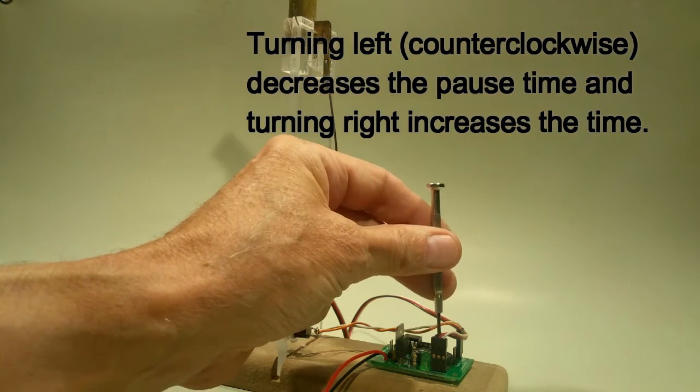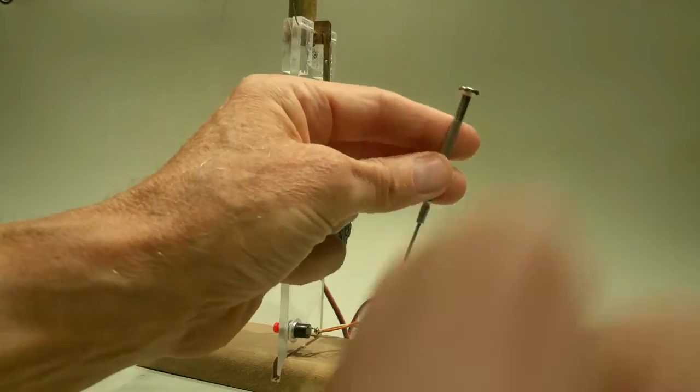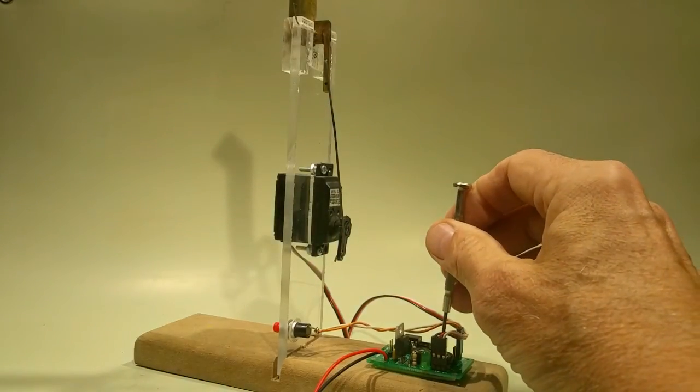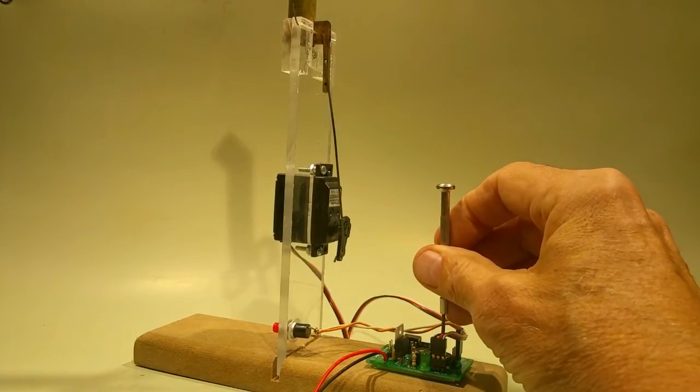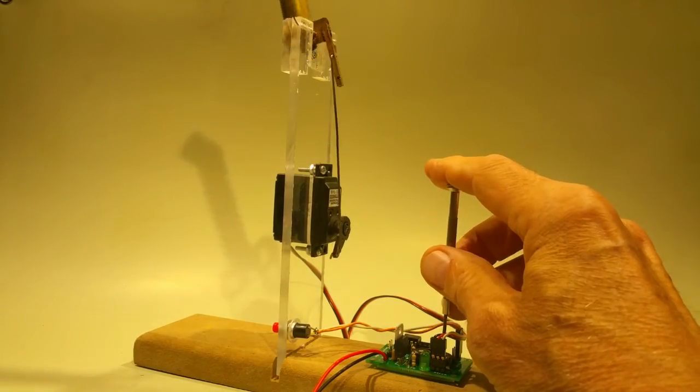The other potentiometer, which is kind of hiding behind the servo plug, adjusts the speed. You'll note right now, the speed is, I would call it medium speed for a servo.